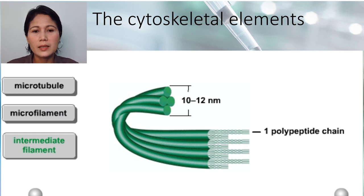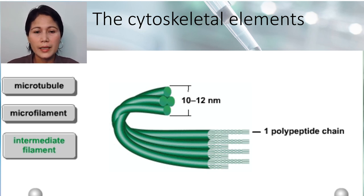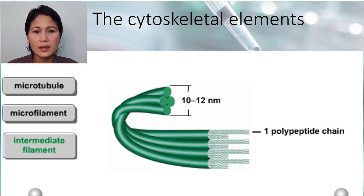Intermediate filaments are the most stable cytoskeletal elements. The six known groups occur only in certain animal cells. They strengthen and help maintain the shape of cells and cell parts.